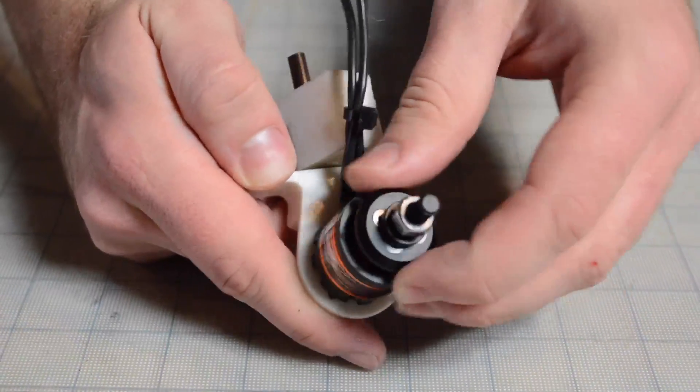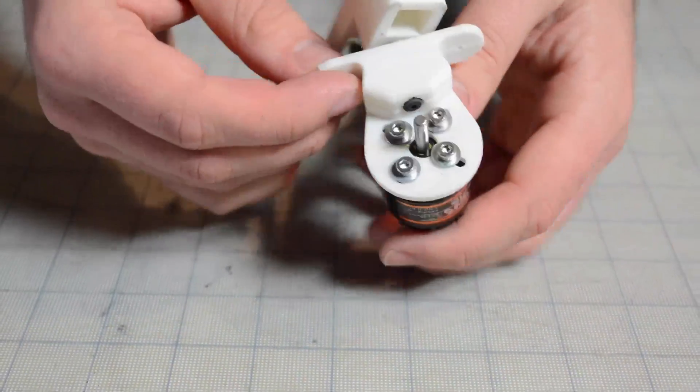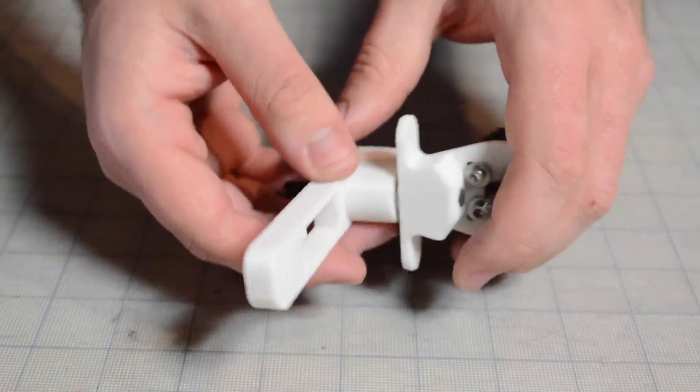and just tighten them down. Now that I've gotten the motor attached, which is pretty easy with the bolts, we're going to attach the servo.